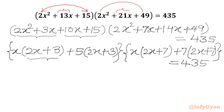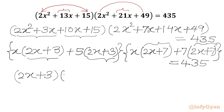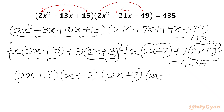Now 2x plus 3, 2x plus 3, 2x plus 7, 2x plus 7 — so I will take common out. The factors we will get are: (2x + 3)(x + 5)(2x + 7)(x + 7) equal to 435.